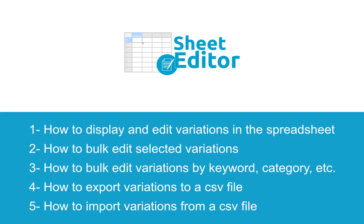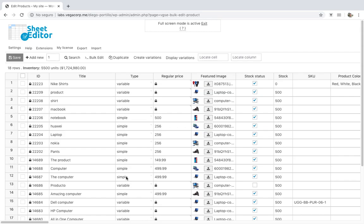4. Export variations to Excel or Google Sheets. 5. Import variations from Excel or Google Sheets. Of course, you can do thousands of other changes — we'll just give you some examples of what you can do with WP Sheet Editor.